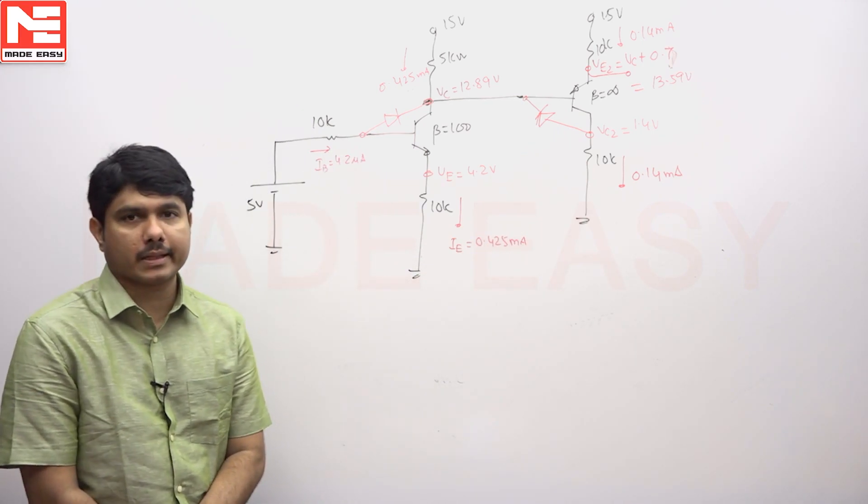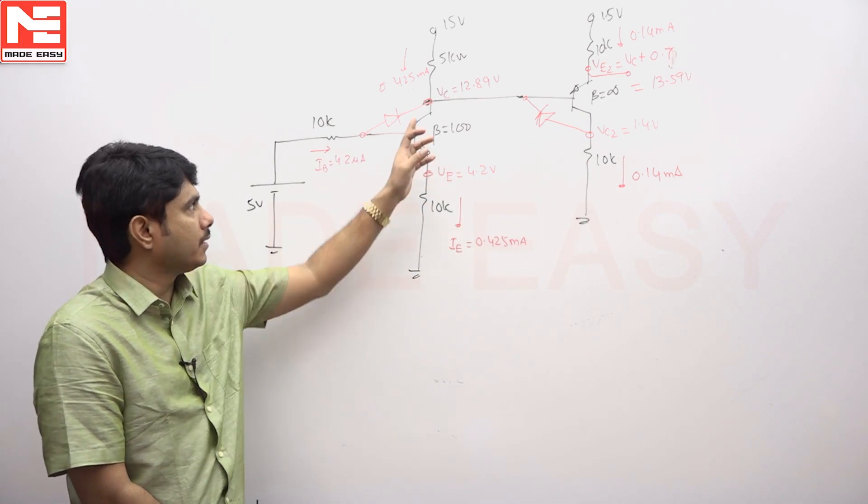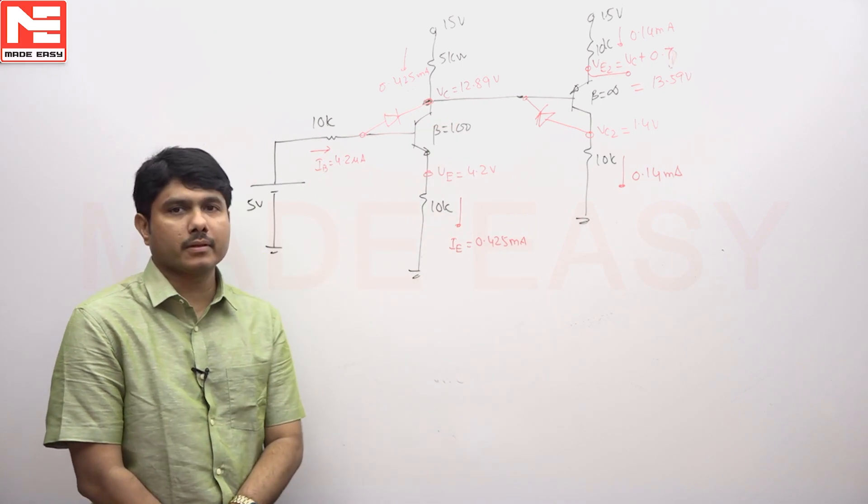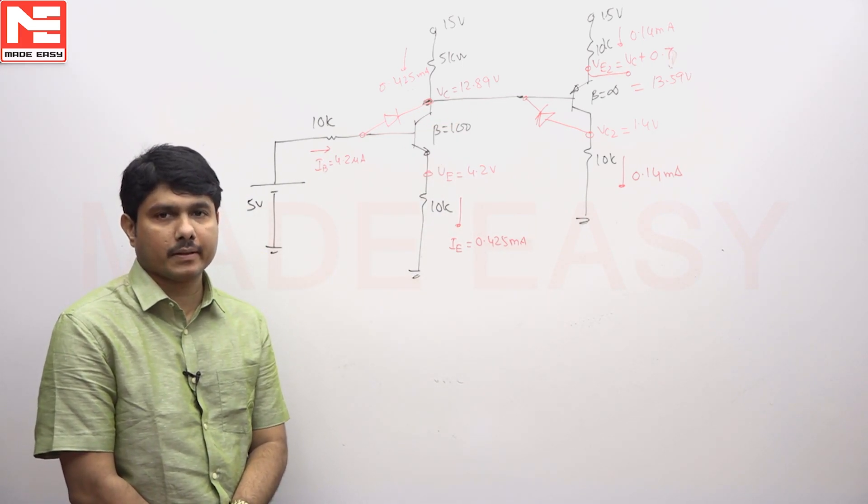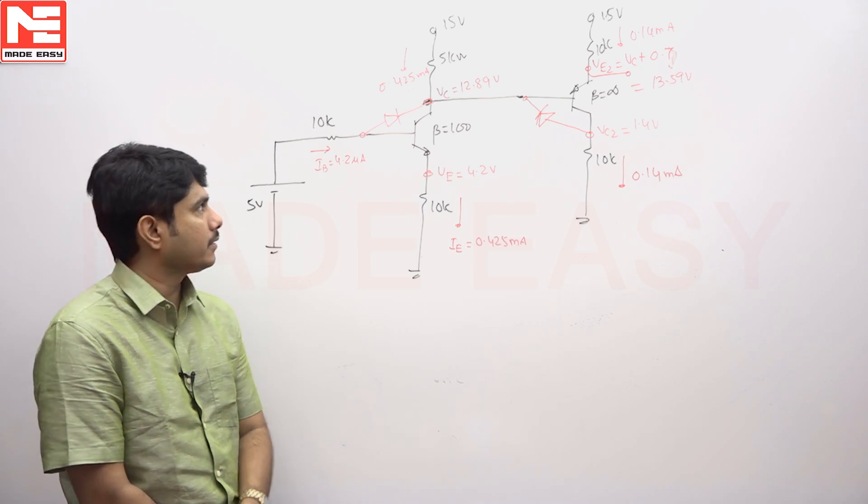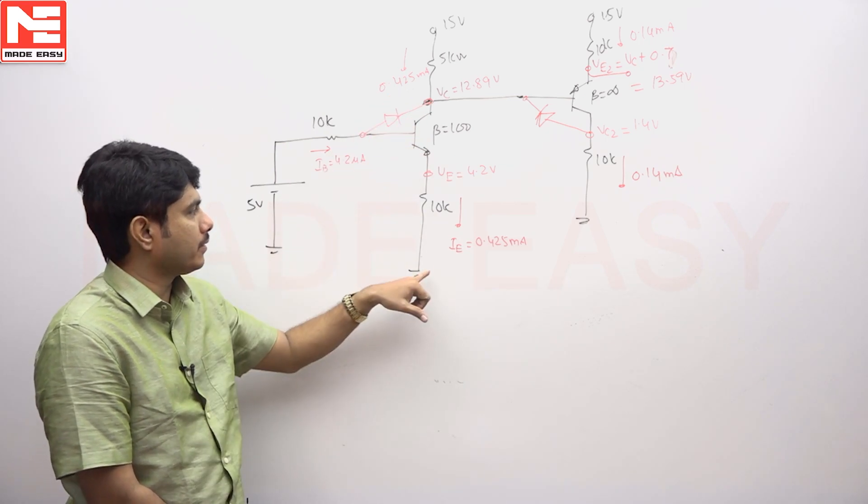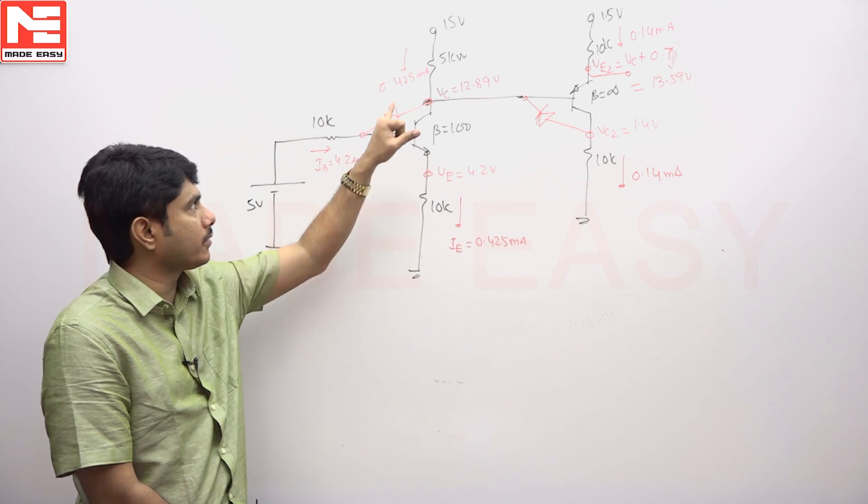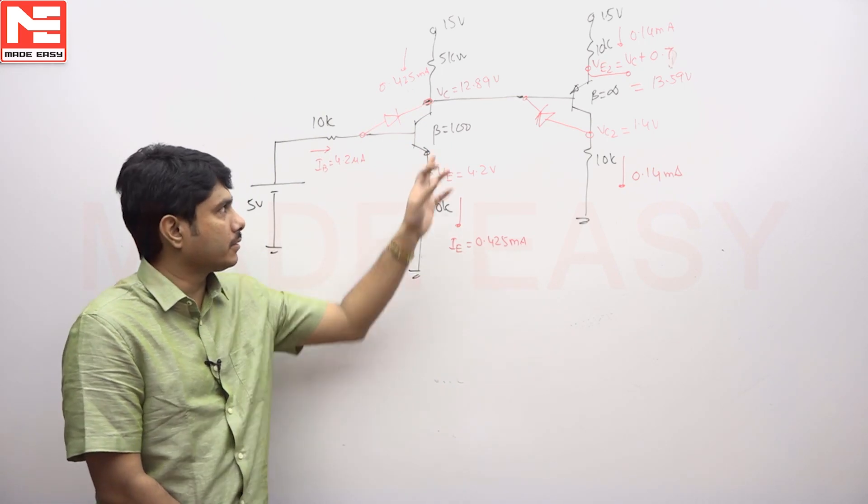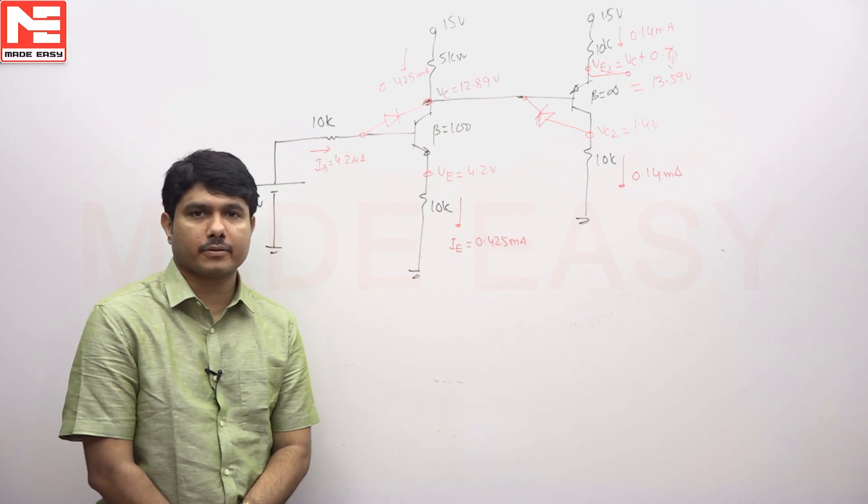What does it mean that the second transistor beta is infinite? It means the base current is not going to the next stage. Since beta is infinite, IB can be zero. That means for this system, you can take IE current equal to IC current. There is no division of base current required.